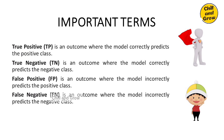Next is False Positive: this particular person does not have a superpower, but the detector says they do — a positive result that is false. That is called False Positive. Next is False Negative: this person has a superpower but the detector says they do not — a negative result that is false. That is called False Negative.